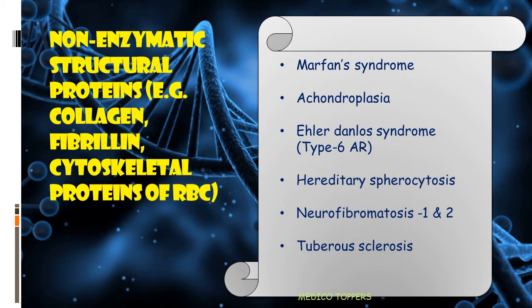Hereditary spherocytosis involves problems in the cytoskeletal proteins of RBC, mainly spectrin and ankyrin. Then comes neurofibromatosis 1 and 2, and tuberous sclerosis — both are neurocutaneous disorders.